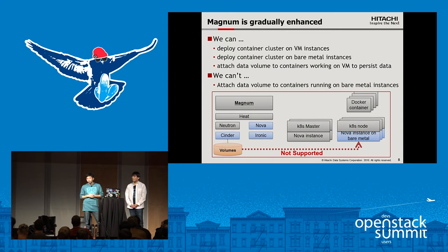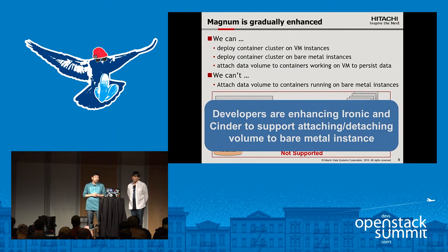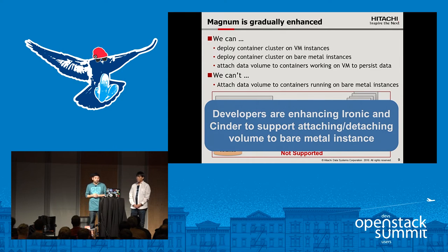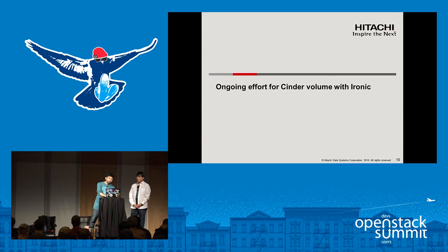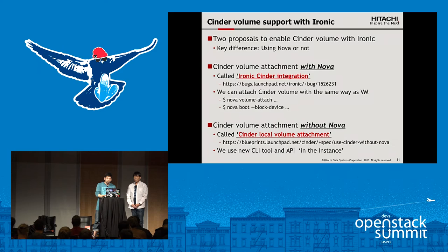But we can't attach data volumes to containers running on bare metal instances. This is because Ironic and Cinder don't support attaching volumes to bare metal nodes. So we need to enhance Ironic and Cinder to support attach and detach of volumes to bare metal instances. I'm going to talk about the ongoing effort for Cinder volume with Ironic. There are two proposals to enable Cinder volume with Ironic.